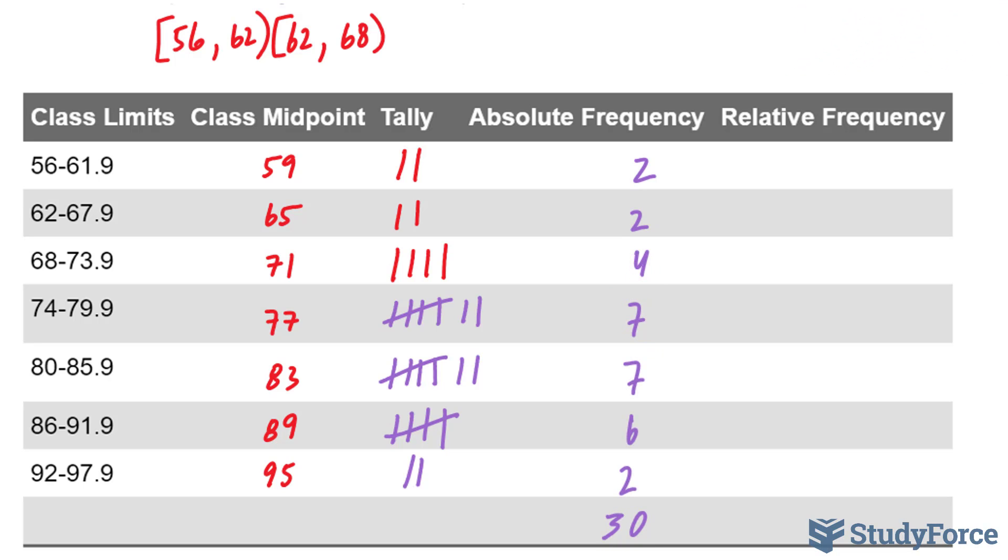The relative frequency is how much this is compared to all of the observations. And this will be a percentage, so we take two divided by 30, and so on. If you do this correctly, you should end up with the following percentages. And adding all of these up should end up giving you 100%.